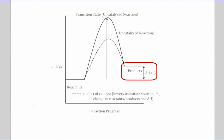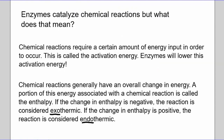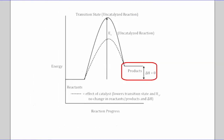The delta H — the change in enthalpy — is greater than zero on this diagram. Delta in science means change, and H is how we define enthalpy. So the change in enthalpy is greater than zero, which means it's positive, meaning this reaction is considered endothermic. So this is an endothermic reaction — it's taking heat from the outside of the system and bringing it in.